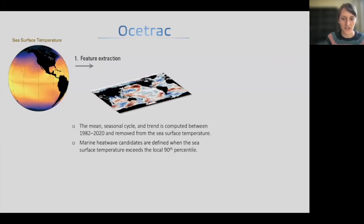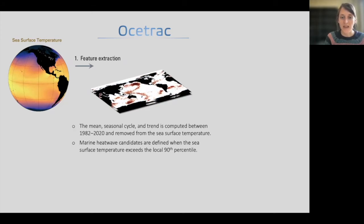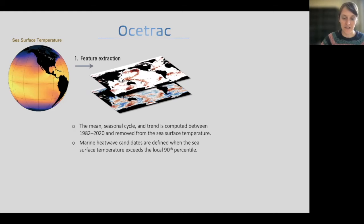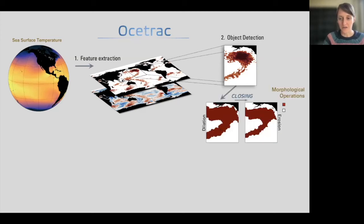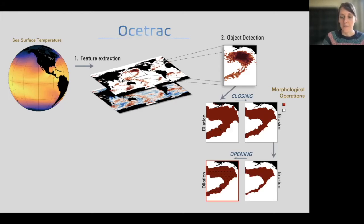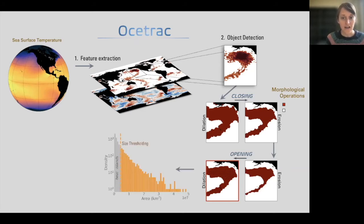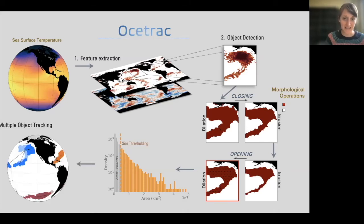I'll go through OSTRAC briefly. We start with the sea surface temperature and essentially find the points that exceed some threshold considered a marine heatwave. Here in this upper map, I'm extracting the really extreme sea surface temperature points. Once we have that, it's a very pixelated and noisy map — we want to find contours around these really intense pixels that we can then define as a marine heatwave. To do that, we use image processing, passing it through a series of different operations. After this process, we now have a closed contour mask for this marine heatwave that we can compute the area of, compute the intensity, how long that blob hung around, and track it throughout the ocean. That essentially is what OSTRAC does.